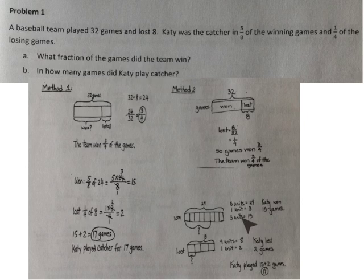To answer our second question using tape diagrams, we can show that out of 24 games, Katie was catcher in 5/8 of those games. So 8 parts, 5 of them. 8 units equals 24. Each unit is 3, so if we have 5 of those, that's 15 showing that she was catcher in 15 games.